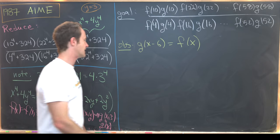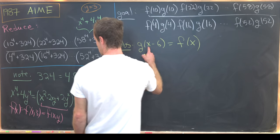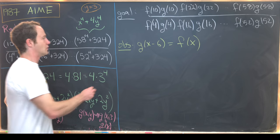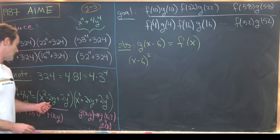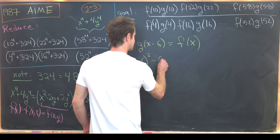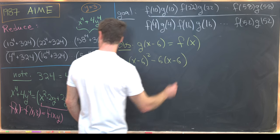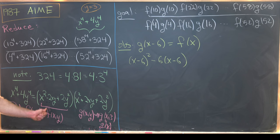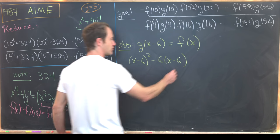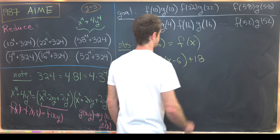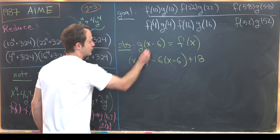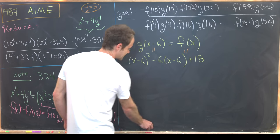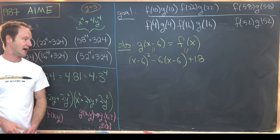And you can check this very easily. Notice that g of x minus 6, well that's just going to be x minus 6 squared minus 6 times x minus 6, notice I'm plugging in 3 for y, plus 18. But then if you were to multiply this out and simplify it, you would get exactly what you need it to be. In other words, you would get f of x.